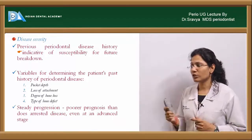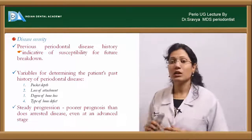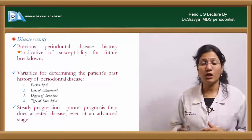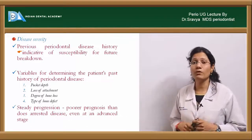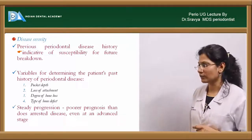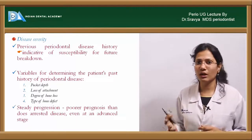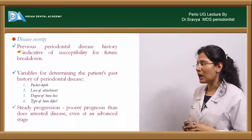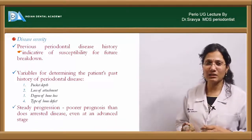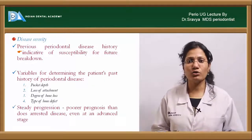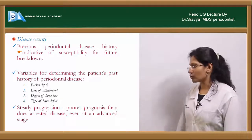The variables for determining a patient's history of periodontal disease are pocket depth, loss of attachment, degree of bone loss, and type of bony defect. If there is a steady progression, the prognosis is going to be unfavorable. If you can arrest the disease, then the prognosis probably would be favorable.